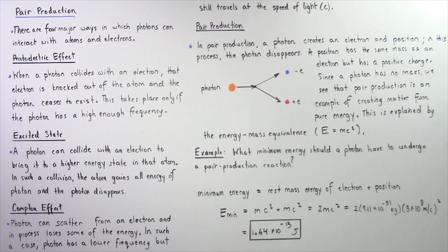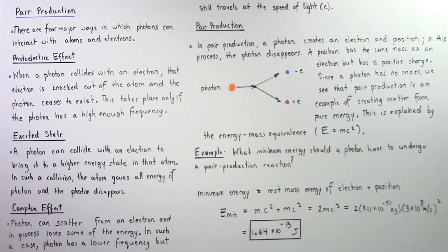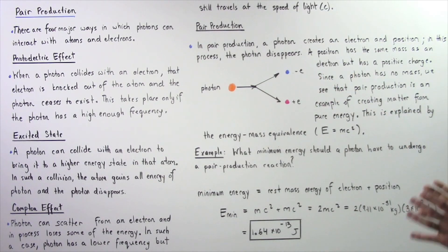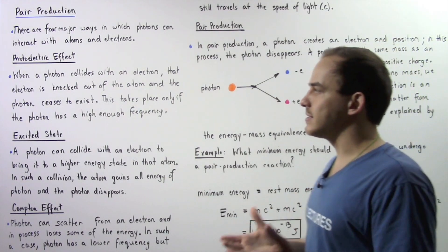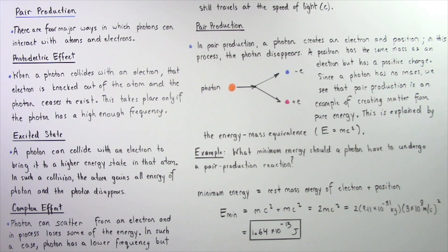Now, since a photon has no mass, we see that the pair production method of interaction is an example of creating matter, creating mass out of pure energy. And this is explained by the energy mass equivalence principle as discussed by Albert Einstein. We'll discuss this in more detail in a future lecture.